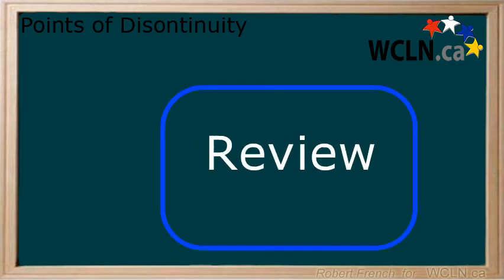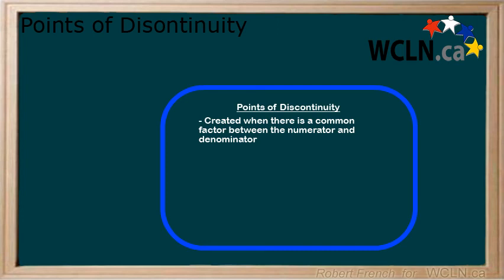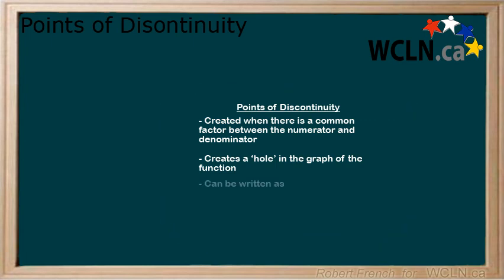In this lesson, you learned that discontinuities are created when there is a common factor in the numerator and denominator, and that it creates a hole in the graph of the function. Once the discontinuity has been identified, it can be written as either there is a discontinuity at x equals the x value of the location of it, or as x cannot equal the x value of the location.